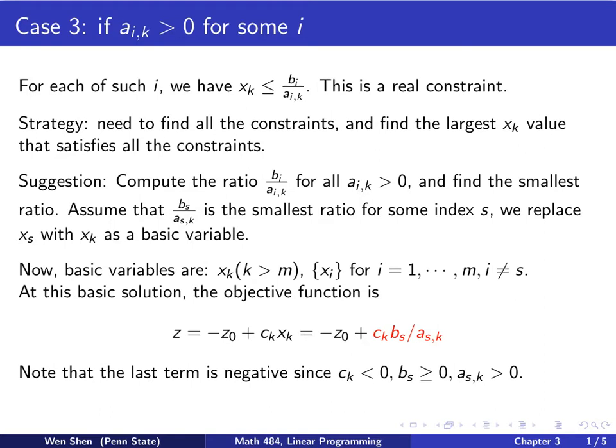Now let's take a look at what happens if we do that. The basic variables are the following: x_k is one of them, where this index k is bigger than m, that's one of the non-basic variables. And then the x_i's for i from 1 to m, that's the old basic variable set, except for the one where i equals s. Basically, you replace the x_s, take it out, and put the x_k in.